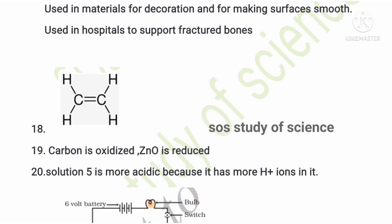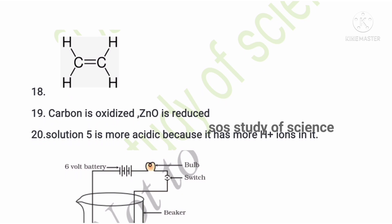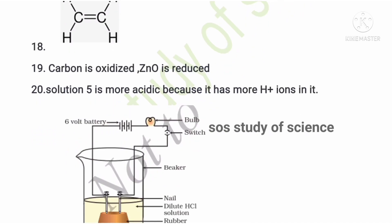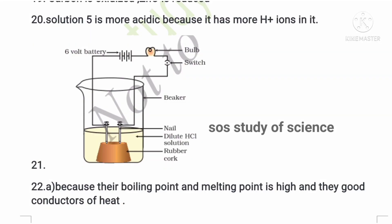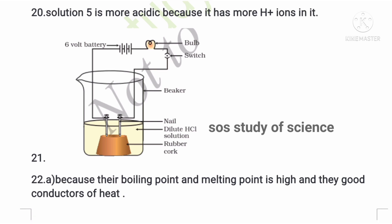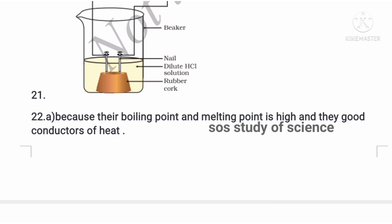The eighteenth question asks you to write the structure of ethene. The nineteenth question gives a redox reaction and asks which substance is oxidized and which is reduced — carbon is oxidized and zinc oxide is reduced. The twentieth question: given pH values of 5, 6, and 7, pH 5 is more acidic because it has more H⁺ ions. The twenty-first question asks you to draw the diagram showing the arrangement of apparatus for testing conductivity of a salt solution.